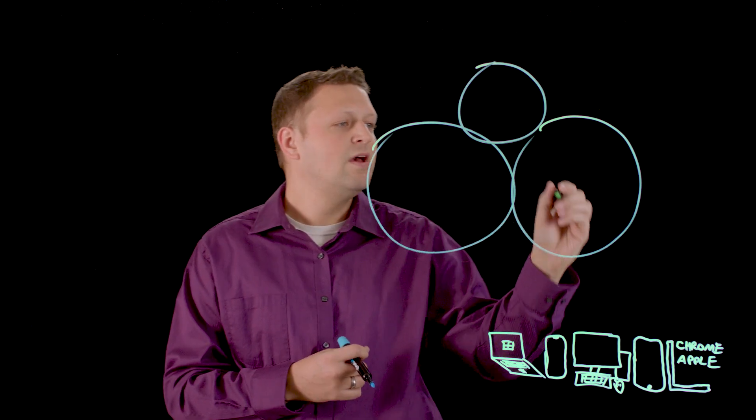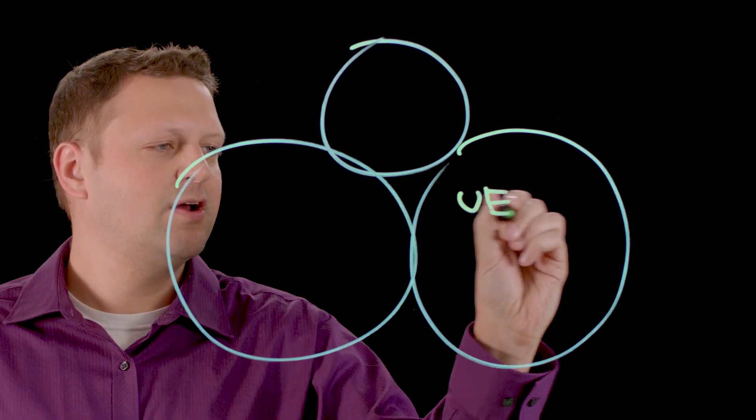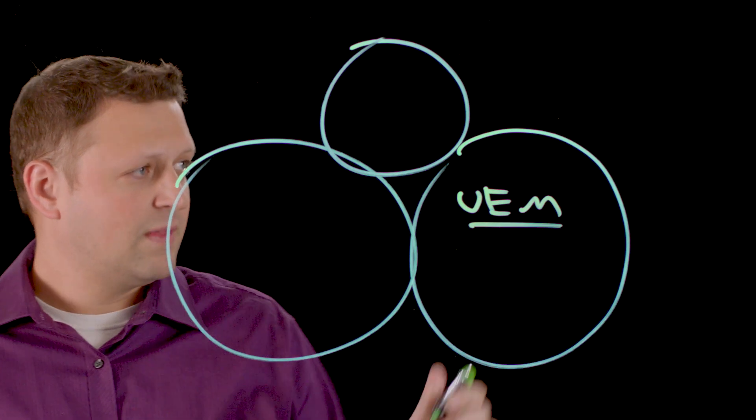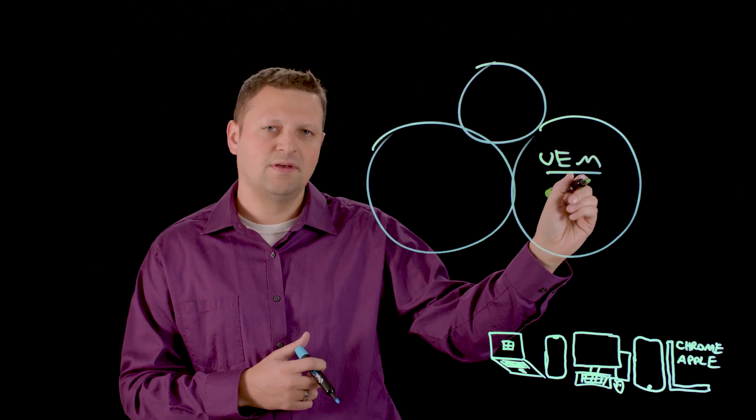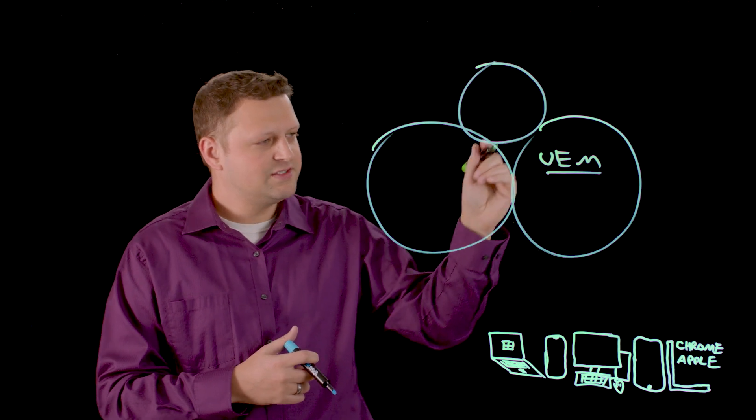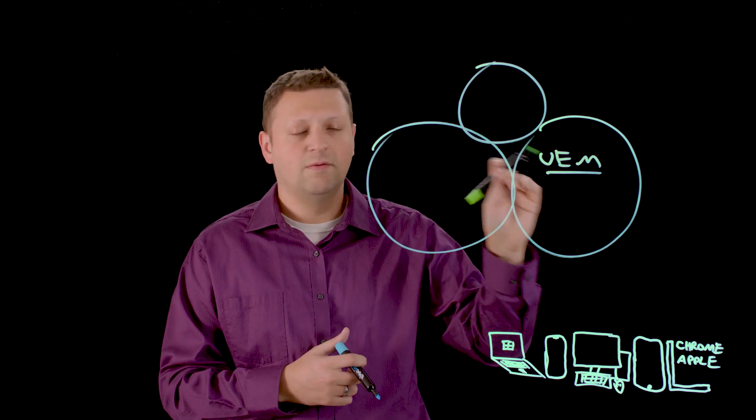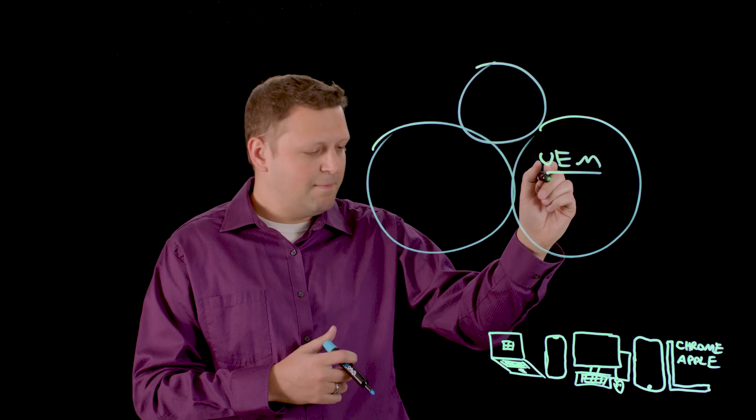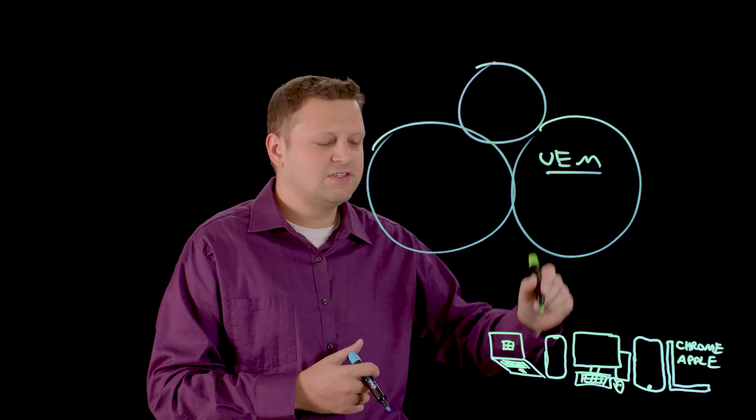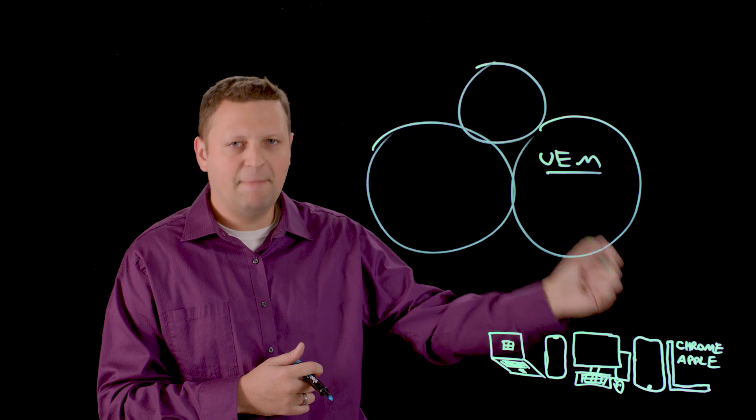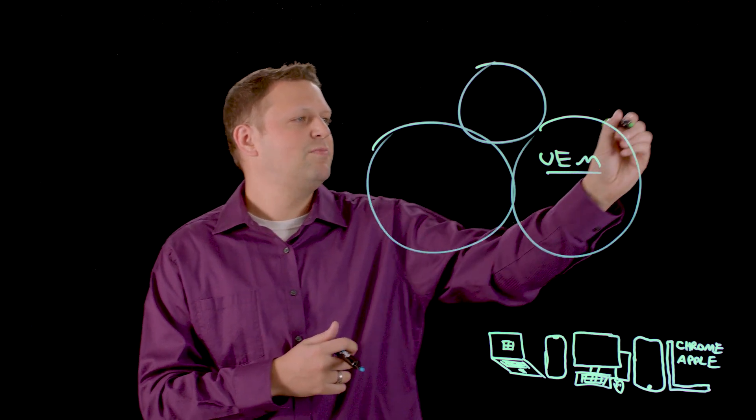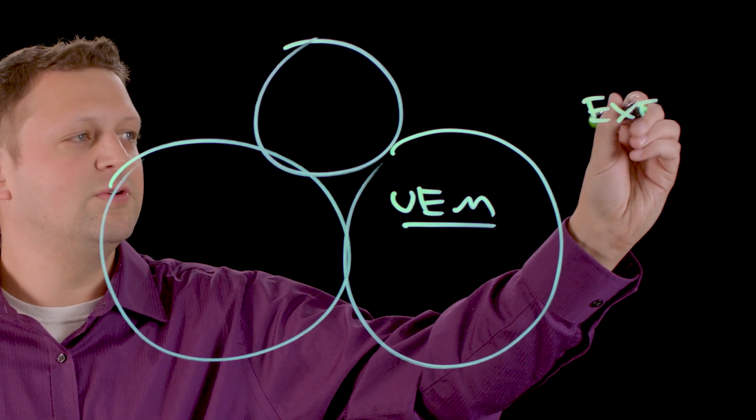As we look at the three primary components for Workspace ONE, the first one that we see is a product called UEM. Workspace ONE UEM is Unified Endpoint Management. What this means is that we have a single solution that was previously known as AirWatch that manages Windows devices, Samsung devices, iOS, Android, MacBooks, and can natively push executables and MSIs.